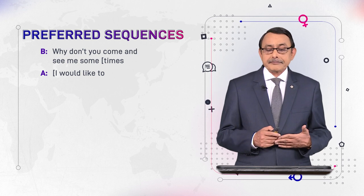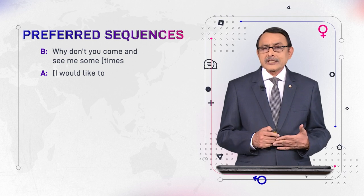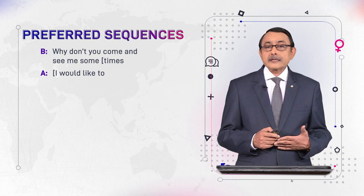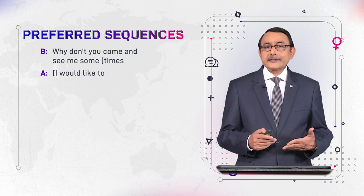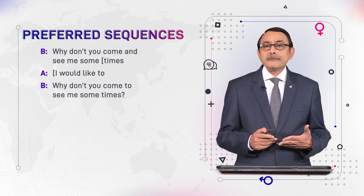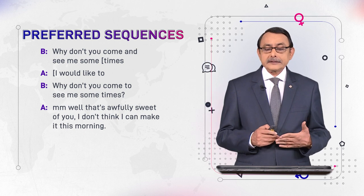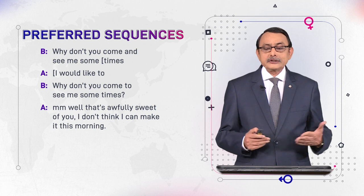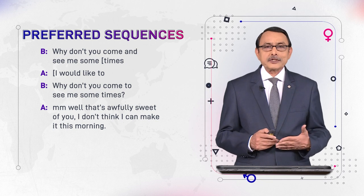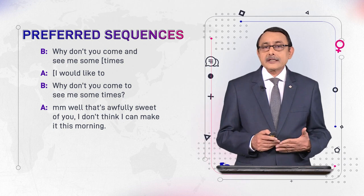Speaker B says 'Why don't you come?' — this is an invitation. Speaker A says 'I would like to' — this is the preferred answer, accepting the invitation. But speaker B again asks 'Why don't you come to CB sometimes?' If speaker A says 'Well, that's awfully sweet of you, I don't think I can make it this morning' — this is a kind of refusal, which was not expected by the inviter. This is a dispreferred answer.